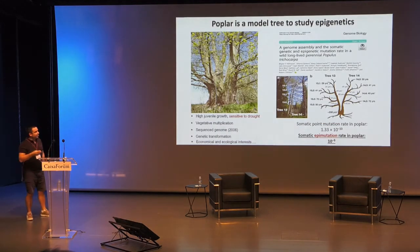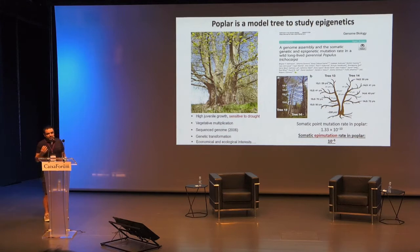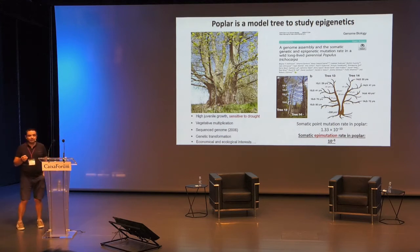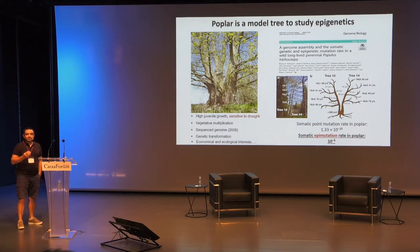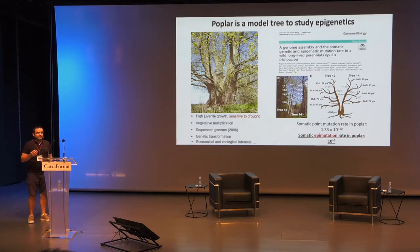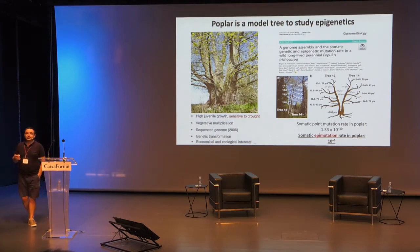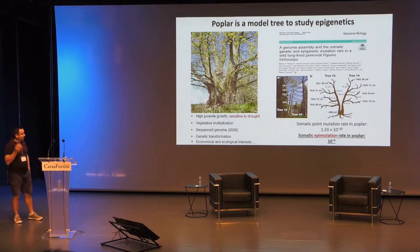Poplar is a model tree for many years for very good reasons. It has high juvenile growth because we need to have plant material. It is very sensitive to drought, so it's a very good indicator of water availability in the soil. We have vegetative multiplication, which allows us to have clones; when doing experimental designs you can have many repeats without genetic variation, making it a very friendly system to study epigenetics. We have sequenced genomes since 2006, genetic transformation, etc.